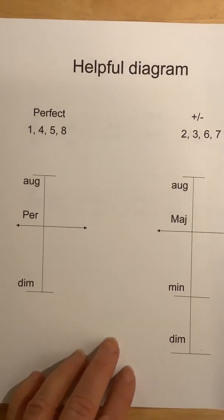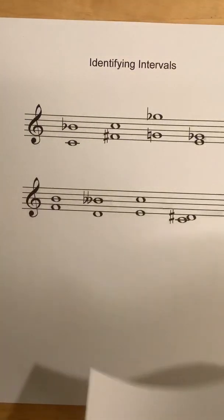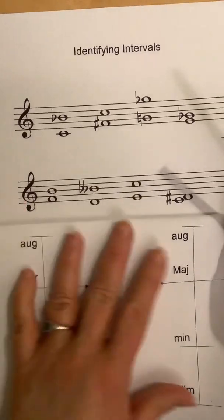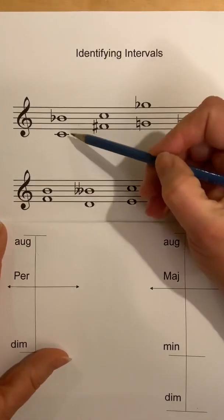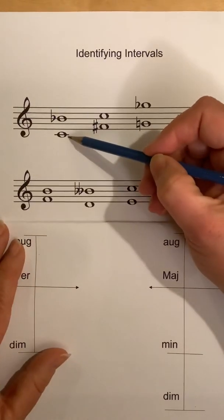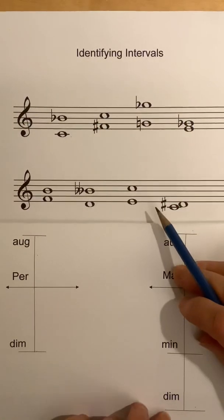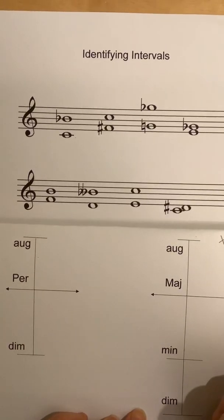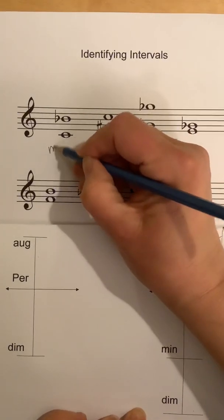Let's identify some intervals using the chart. Here we have a C to a B-flat — first of all, that's a seventh. C major has a B-natural in it. So looking at the chart, the major-minor side: C major should have a B, but this is a B-flat, so it's a minor. That's a minor seventh.